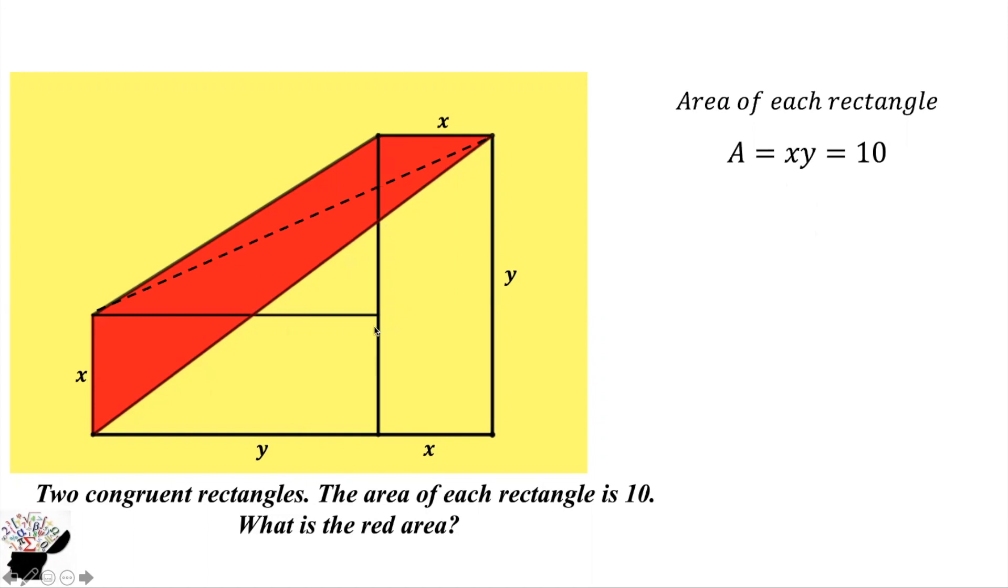this one. Perpendicular height is this one. We know that this side is x and this whole side is y, so y minus x will give us the perpendicular height of this first triangle.